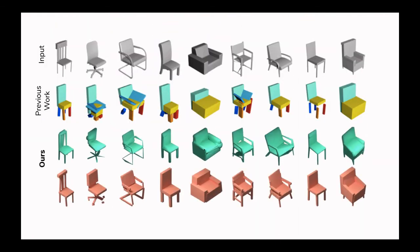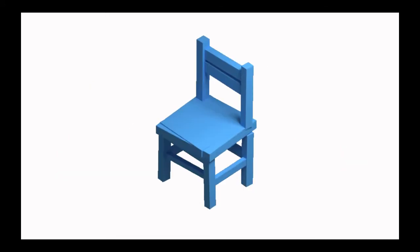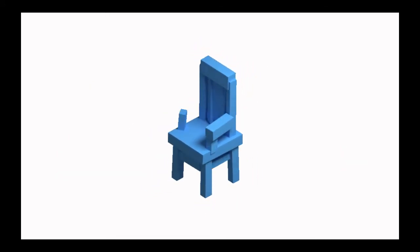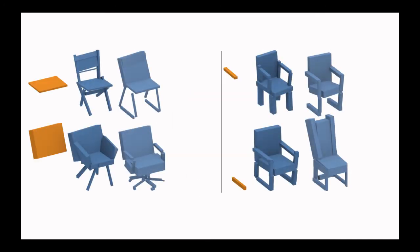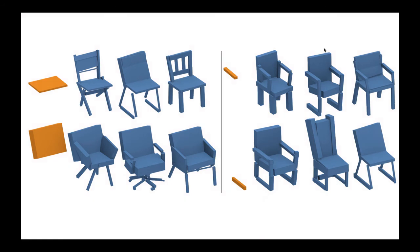We demonstrate how the latent space learned by our model can be used to guide multiple tasks. We can generate shapes containing handle constraints defined by the user, allowing our model to propose multiple plausible shapes given a single user-created handle.